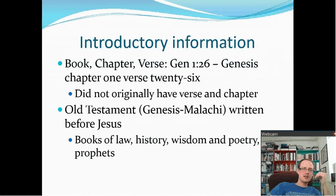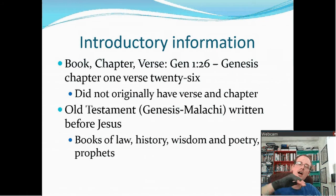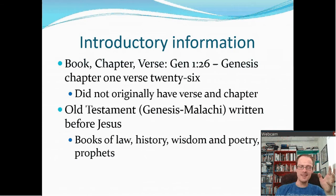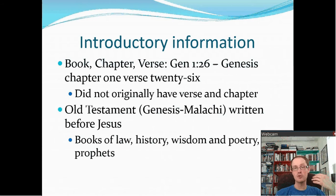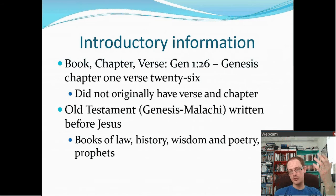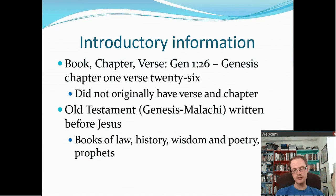When people are referencing the Bible, they say book, chapter, verse — for example, Genesis 1:26 means Genesis, chapter 1, verse 26. Originally there was no chapter and verse separation, so you can't be too particular about that. The Old Testament runs from Genesis through Malachi and was written before Jesus. It consists of the books of the law — Genesis, Exodus, Leviticus, Numbers, Deuteronomy — then history from Joshua through Nehemiah, then wisdom and poetry including Psalms, Proverbs, Ecclesiastes, and Song of Songs, and then the prophets such as Isaiah and Jeremiah.